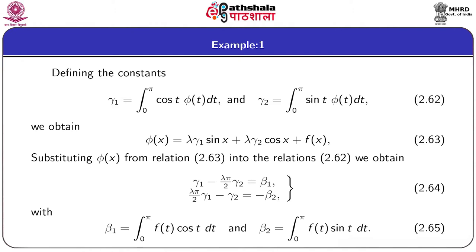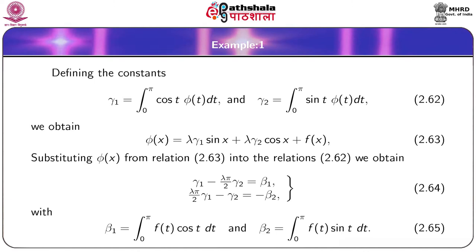The right-hand side functions β1 and β2 are constants given by equation 2.65. β1 and β2 are related to the forcing function f(t).